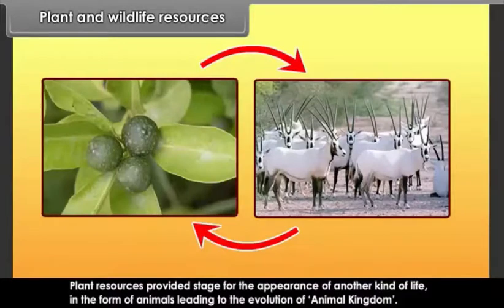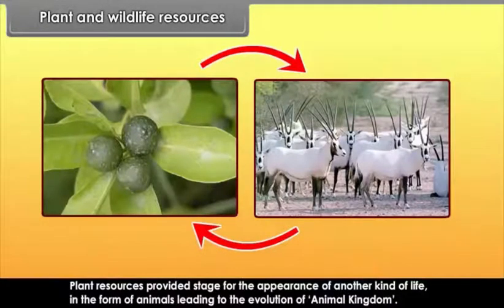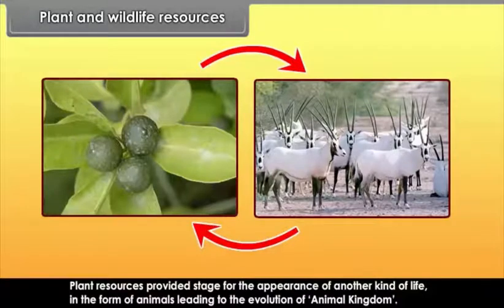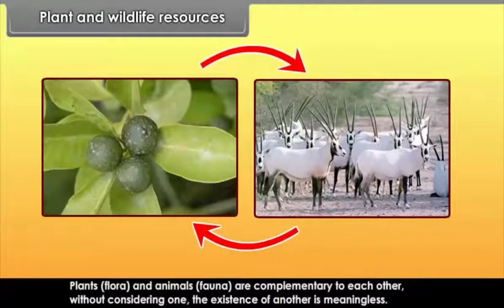Plant resources provided the stage for the appearance of another kind of life in the form of animals, leading to the evolution of animal kingdom. Plants (flora) and animals (fauna) are complementary to each other. Without considering one, the existence of another is meaningless.